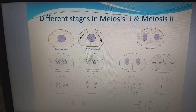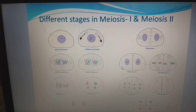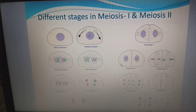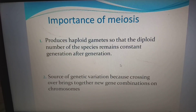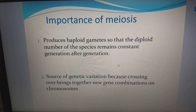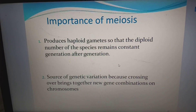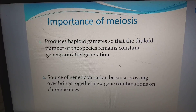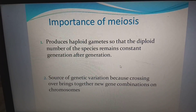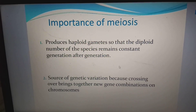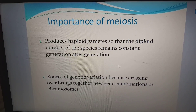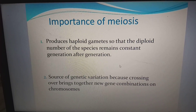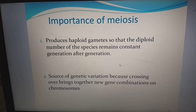Importance of meiosis: meiosis produces haploid gametes so that the diploid number of a species remains constant generation after generation. It is a source of genetic variation because crossing over brings together new combinations of chromosomes.